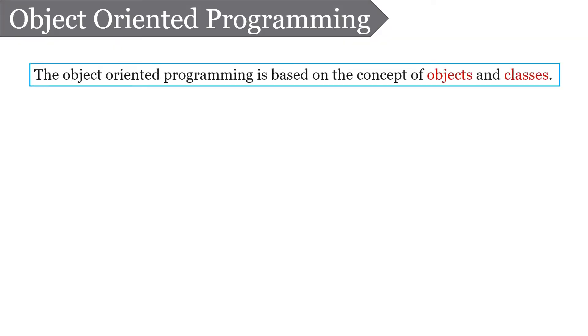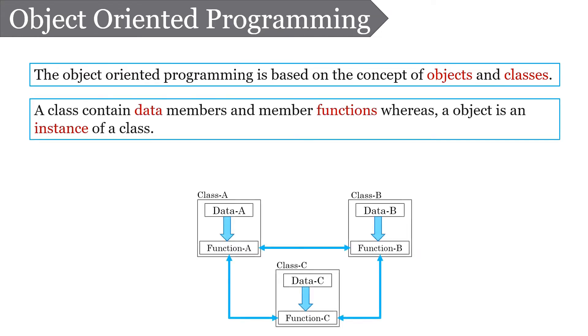Now let us proceed with object oriented programming. Object oriented programming is based on the concept of objects and classes. An object is an instance of a class on which operations have to be performed. A class describes the structure of an object using data members and member functions that can operate on this object.